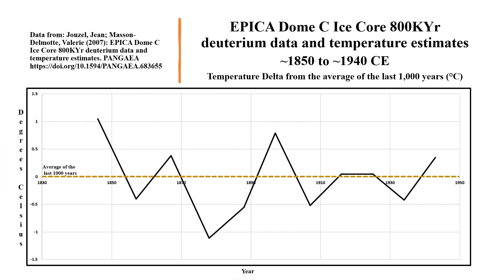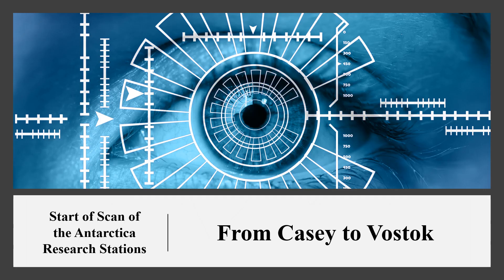This means we still need to rely on the EPICA data up to about 1940, from which time data from research stations on Antarctica start to become available. Over the period of 90 years from 1850 to 1940, the average temperature of Antarctica hovered around the 1,000-year average with a mild downward trend. We are now ready to start our analysis using the data from international research stations, scanning around Antarctica from the Casey research station to Vostok.